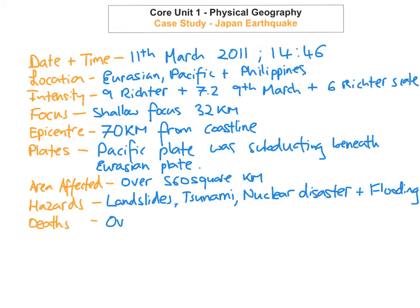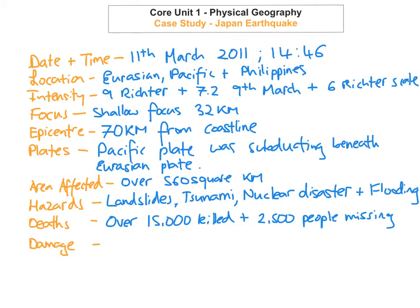With the death toll, there were over 15,000 people killed, and to this day there are still over 2,500 people missing. In terms of damages, there was an estimate of between 120 to 230 billion worth of damage caused, which is about 2 to 4% of Japan's total GDP. There were also over 3,000 people injured that needed medical care.